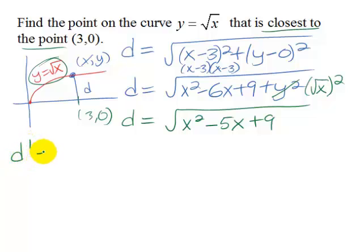So derivative is going to be, now let's go ahead and rewrite this as a one half power instead of a radical because then we can find a derivative using the power rule. This is going to need a power rule, chain rule.